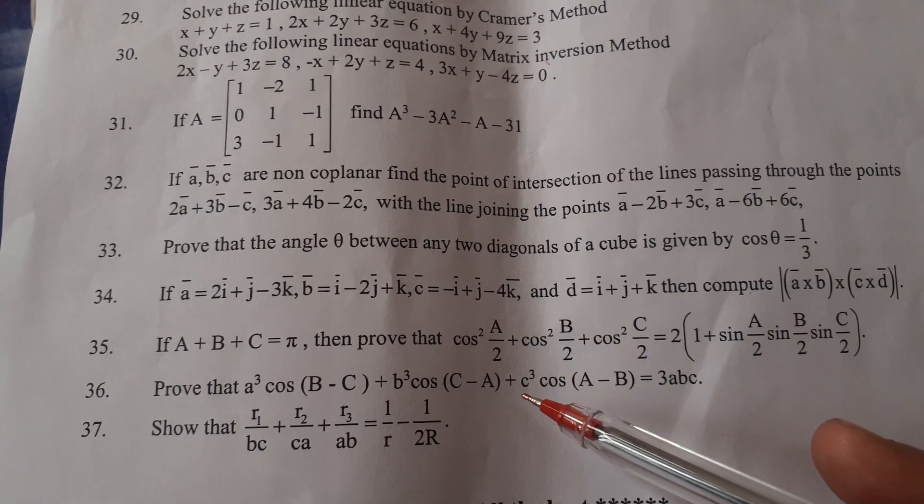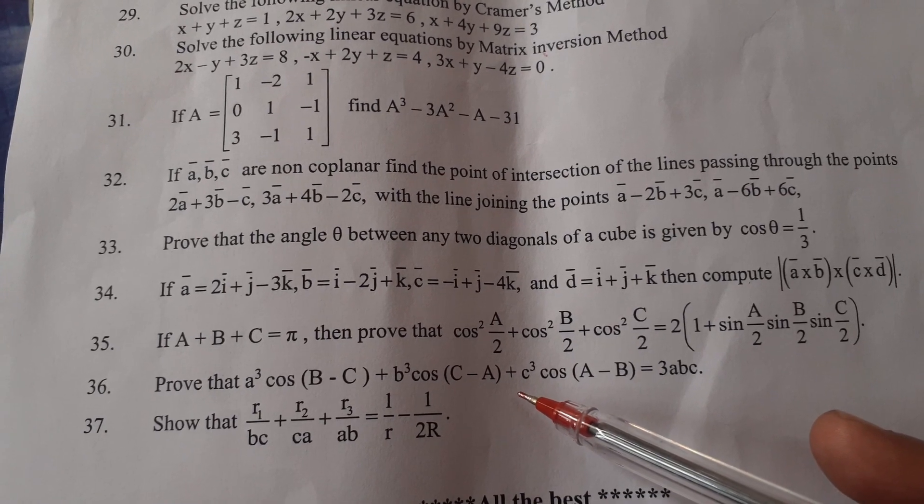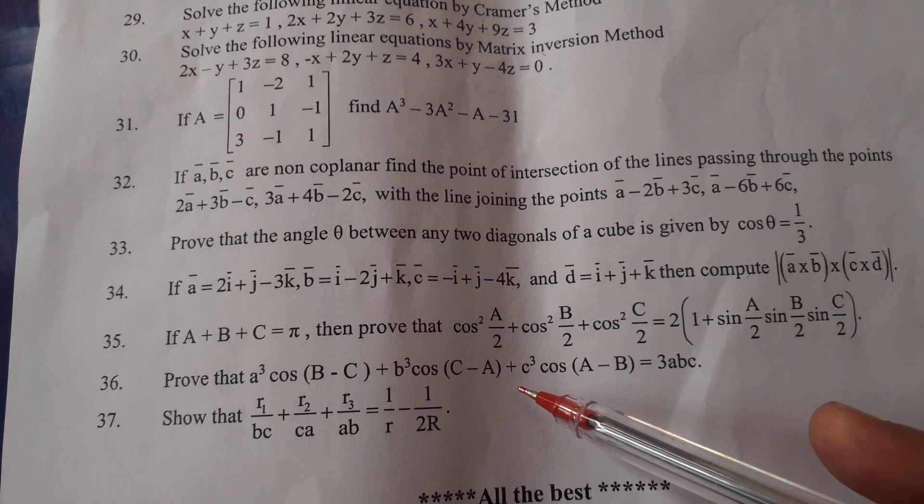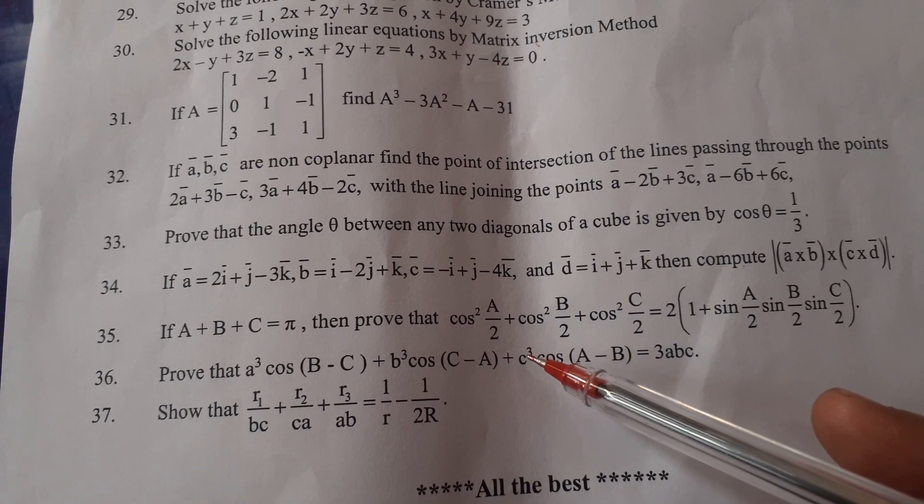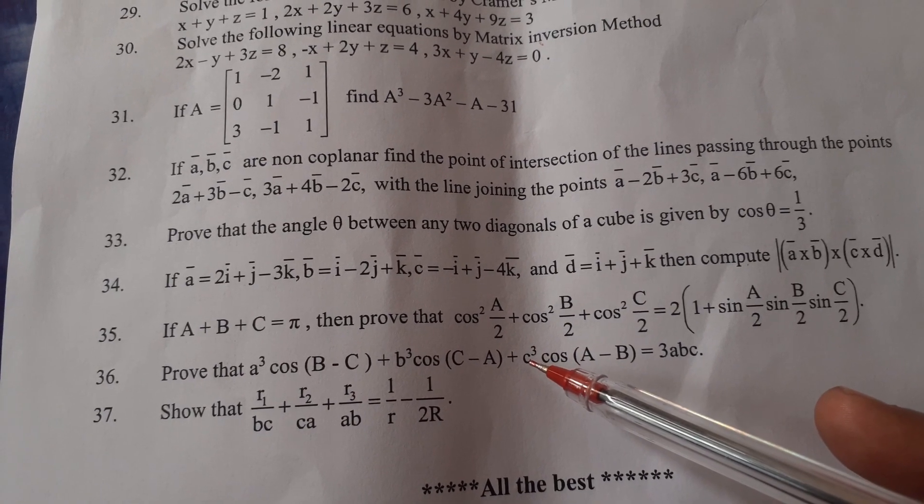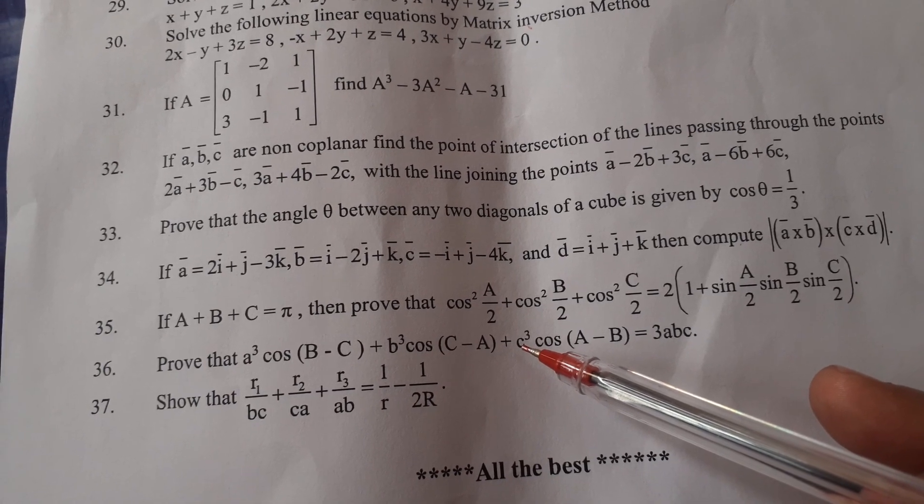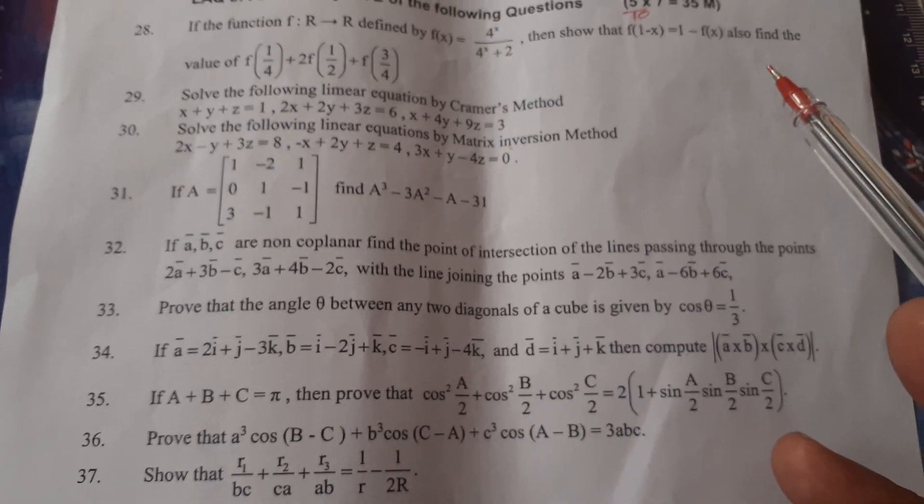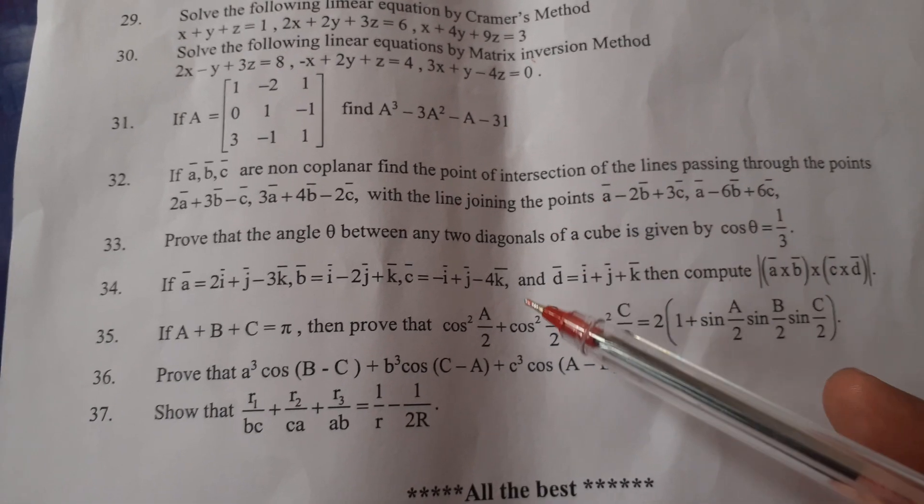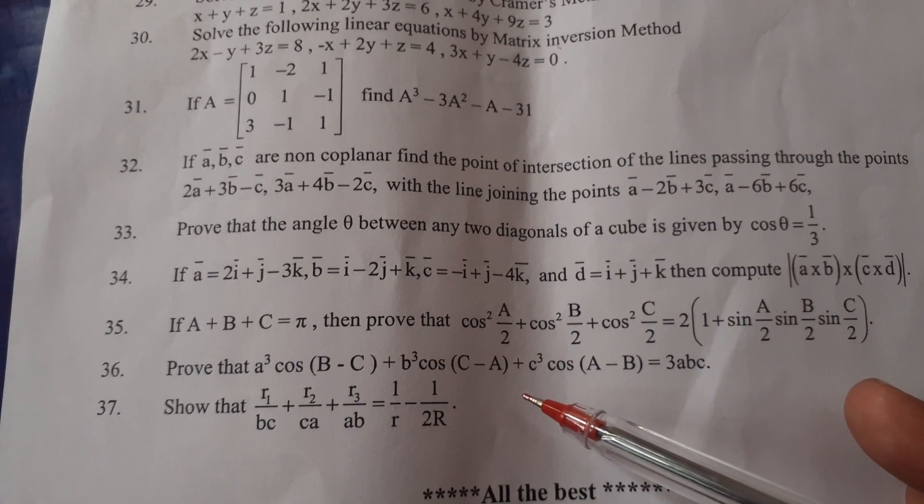Out of 10 LAQs, 5 only we have to answer. 50% choice is there. 5 times 7 is 35. Earlier sections: VSAQs 20 marks, SAQs 20 marks, 40 plus 35 equals 75 marks. So this is a 75 mark paper with 3 hour duration.